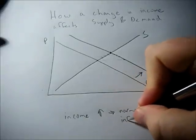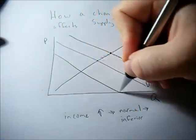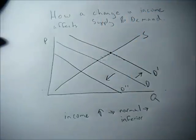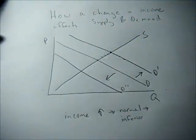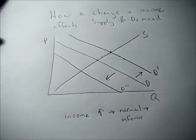Now if the good is inferior, demand will go down. Let's say we're eating a lot of Top Ramen and we win the lottery. We're probably not going to eat as much Top Ramen anymore; we may buy spaghetti or steak.